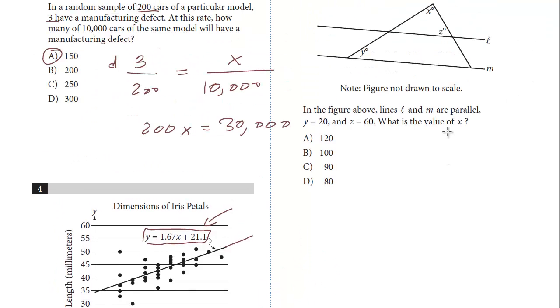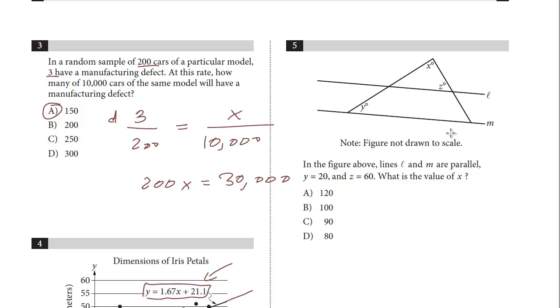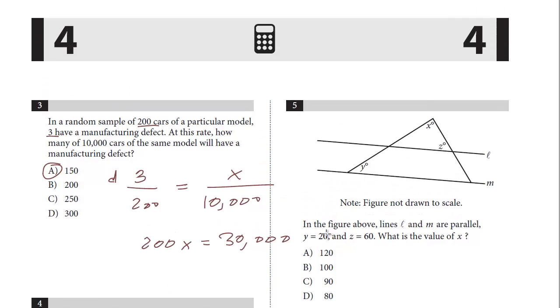Let's take a look at number five. In the figure above, lines L and M are parallel. Y equals 20, Z equals 60, what's the value of X? So let's put in the values. Y is 20, and Z is 60. And they tell us that these are parallel.